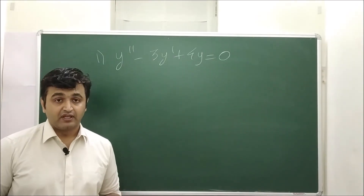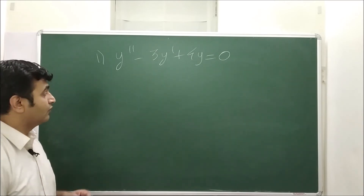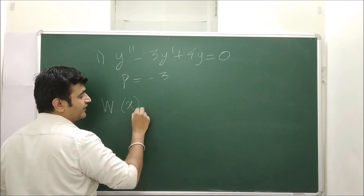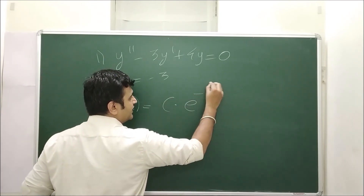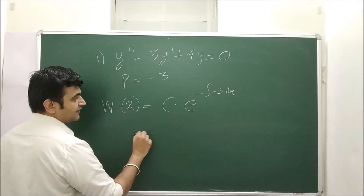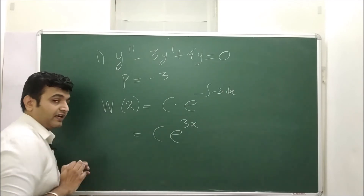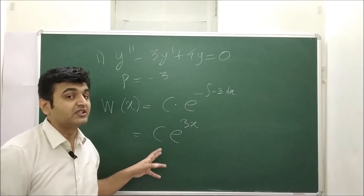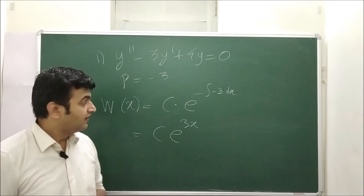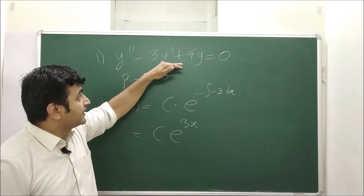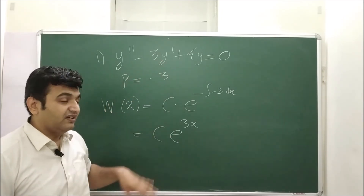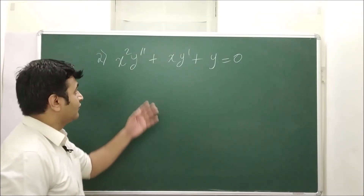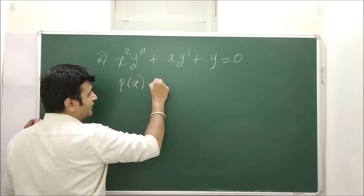Now let's see an example. Suppose the differential equation has p = −3. Then the Wronskian of y1 and y2 is some constant times e^(−∫(−3)dx) = c·e^(3x). So just by looking at the differential equation, you can tell almost exactly what the Wronskian will be. That's the beauty of Abel's formula.